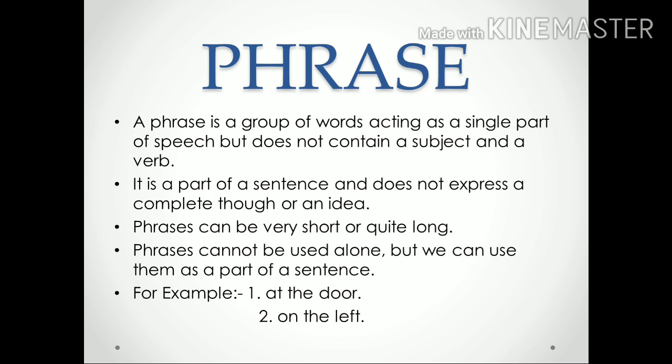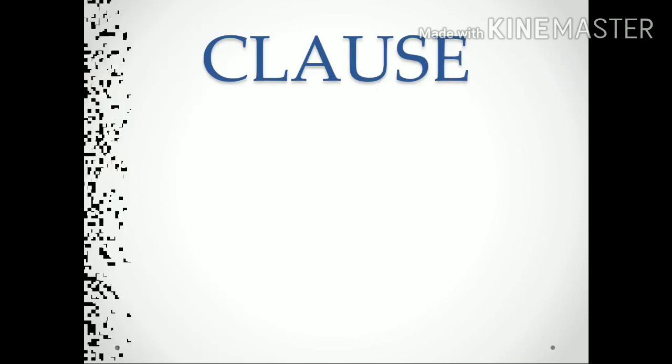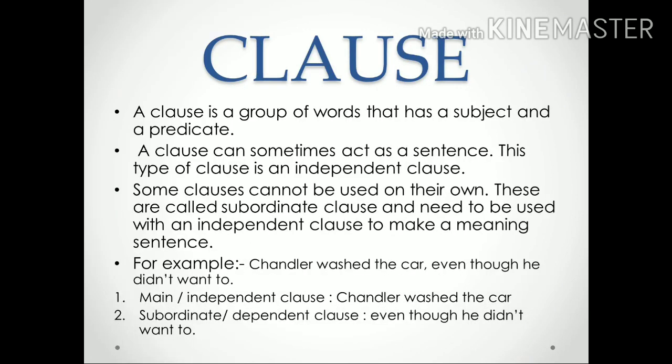Next is a clause. A clause is a group of words that has a subject and a predicate. A clause can sometimes act as a sentence. When a clause acts as an entire sentence, it is called an independent clause. Sometimes a clause cannot be used on its own — these are called subordinate clauses. Subordinate clauses are dependent on the independent clause and need to be used with it to make a meaningful sentence.